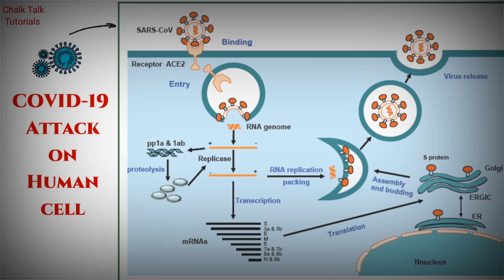After that, these proteins and genome combine together in a process known as assembly, to form new viruses. From one virus, they can produce many thousands of viruses from a single cell. These proteins and RNA genome are very harmful and dangerous for the human body, causing very fatal symptoms and diseases as seen in this outbreak.